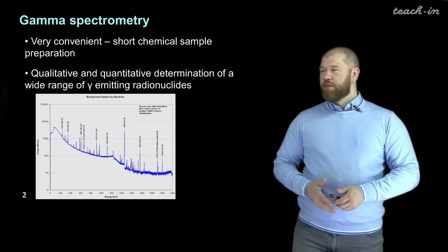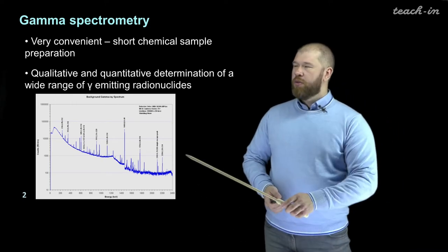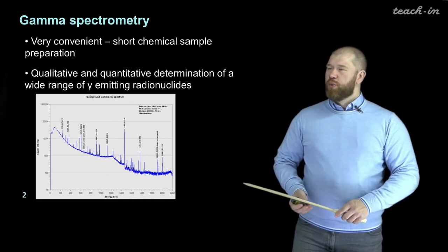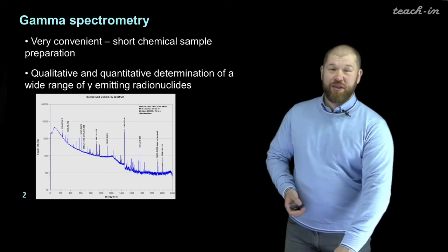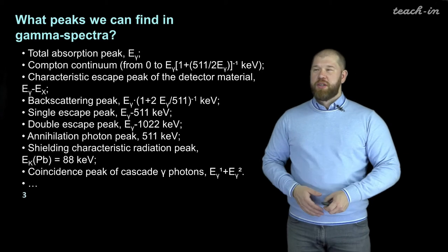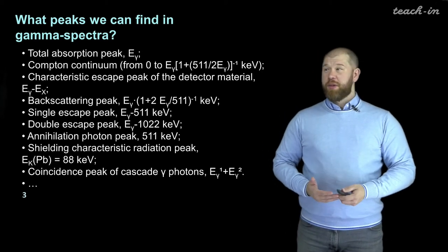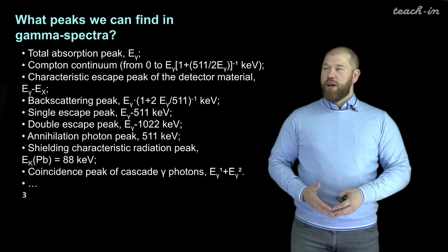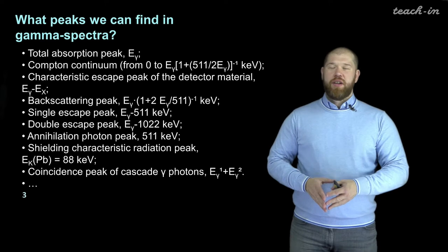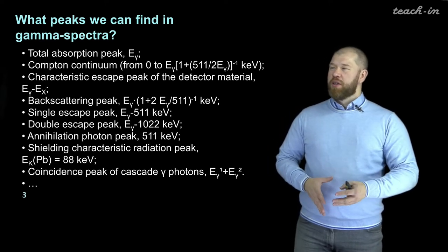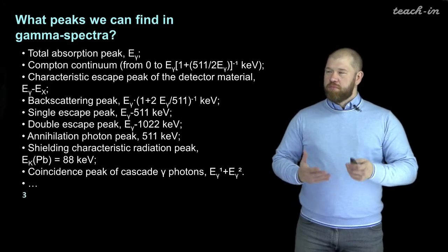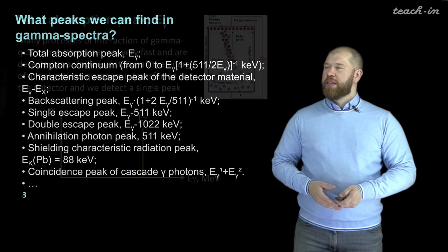Here you can see a typical gamma spectrum. It is the gamma spectrum of the background radiation — you see how many peaks, how many gamma-emitting radionuclides are in our background. What peaks and how many peaks we can find in a gamma spectrum. You can see there are quite a lot of different peaks. First of all, there is a total absorption peak and then a variety of peaks that are related to our initial gamma quanta. We will go through all of them step by step.